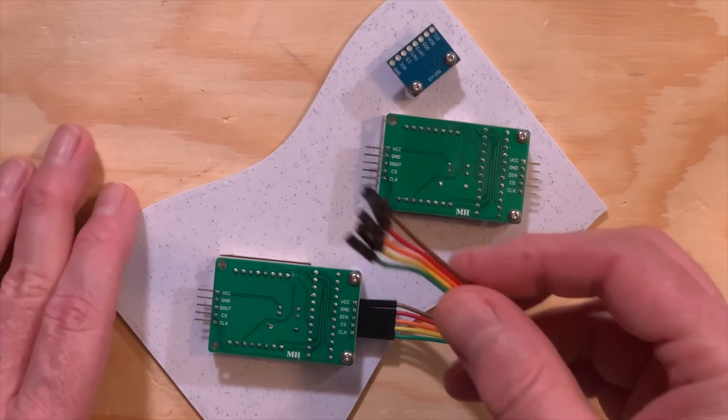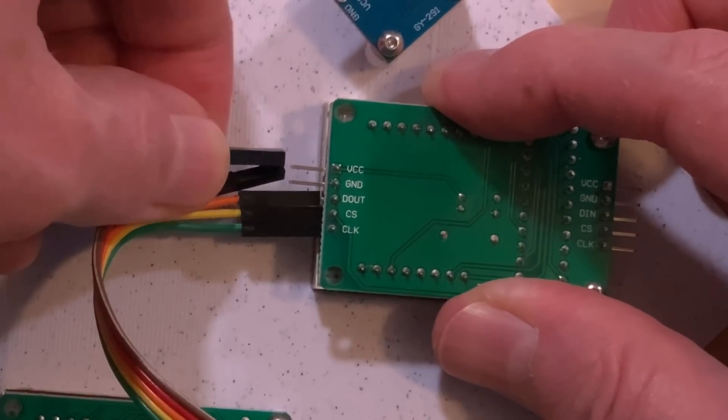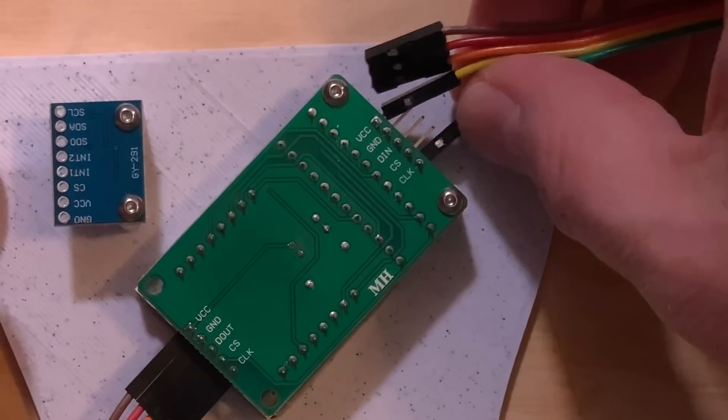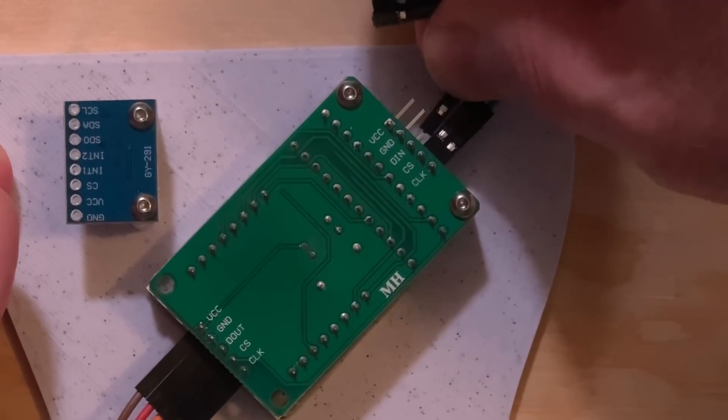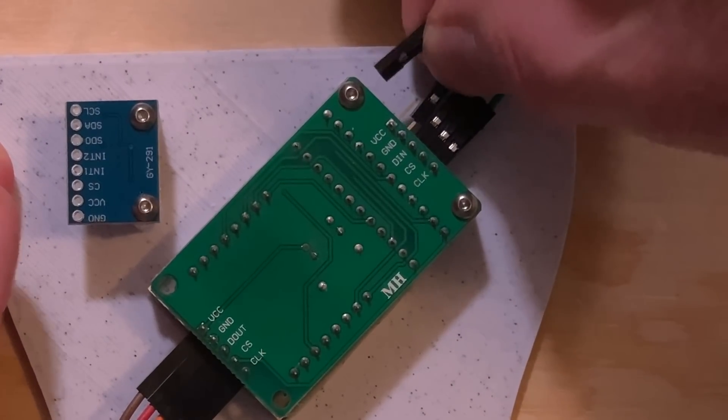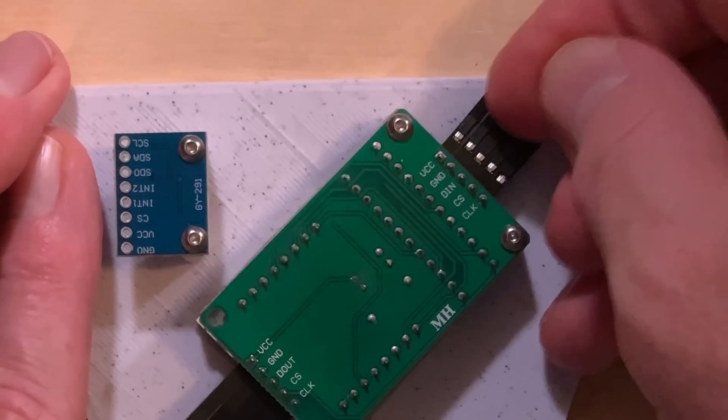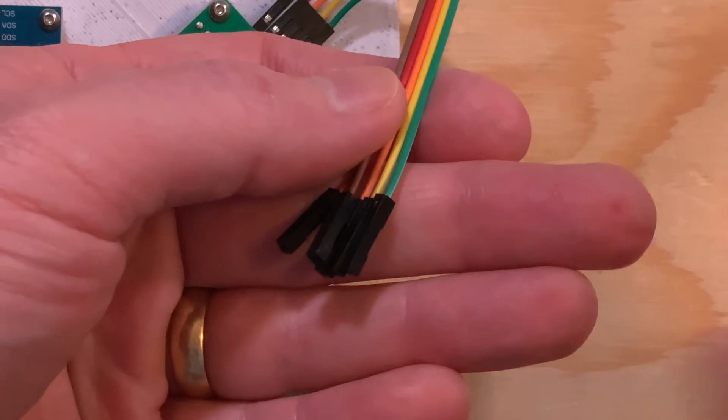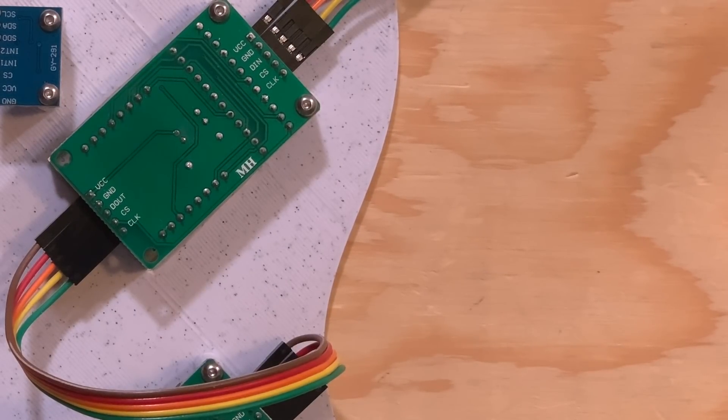By keeping the color coding the same with the ribbon cables I got, VCC is always brown, ground is always red, D-that's data, is always orange, CS is always yellow, and clock is always green. So connect the other end of that five-wire ribbon cable to the D-out side of the panel that's closest to the top.